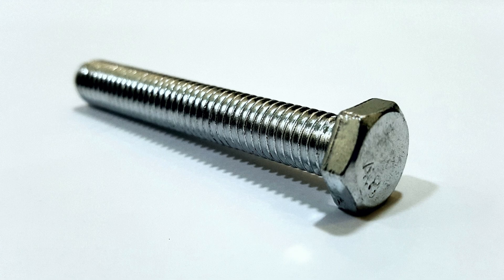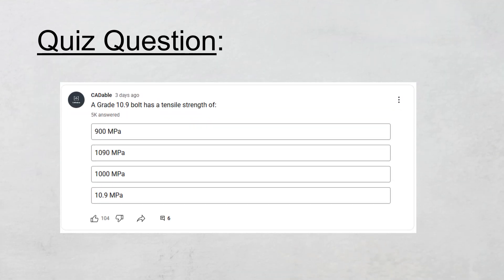So let's go to our presentation. Recently I asked a quiz question: a Grade 10.9 bolt has a tensile strength of... and the options were given as 900 MPa, 1090 MPa, 1000 MPa, and 10.9 MPa.